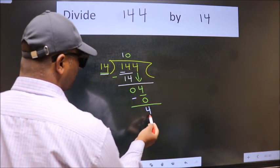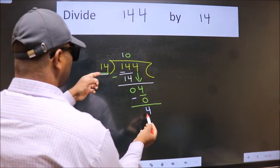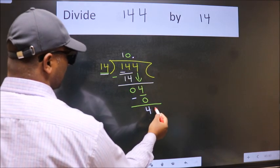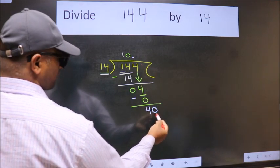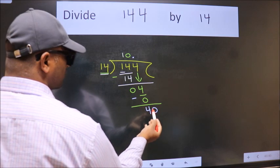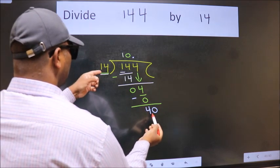And 4 smaller than 14. So now we can put dot and take 0, so 40. A number close to 40 in the 14 table is